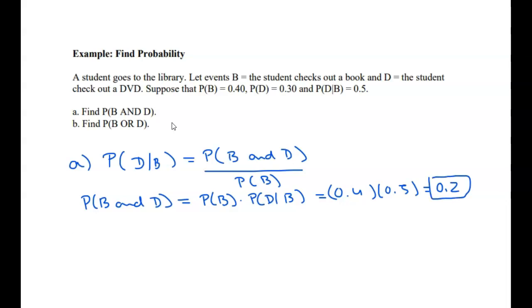Now part B asks what's the probability of B or D? By definition, this is the probability of B plus the probability of D minus the probability of B and D.